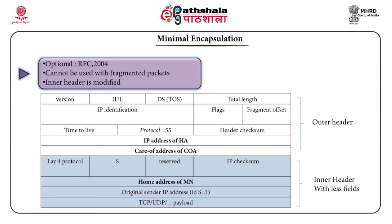To remove several redundant fields like TOS, minimal encapsulation is used. The changes are reflected in the inner header. The protocol field is set to 55, indicating minimal encapsulation. The destination address is the IP address of the exit point of the tunnel. S, the source address present bit — if S equals 1, information about the original sender is included; if S equals 0, it is not included. The length field is incremented by 12 octets if S equals 1, and by 8 octets if S equals 0.